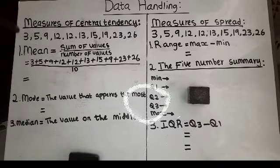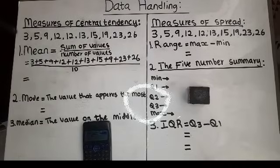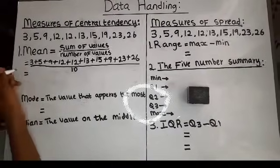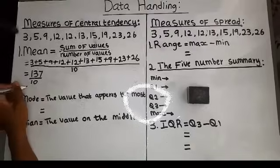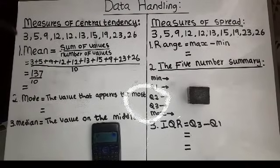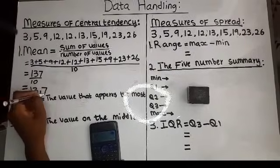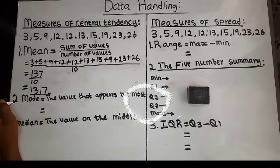We divide the sum by 10. That gives us 137 over 10. Pressing this on the calculator: 137 divided by 10 gives us 13.7. So 13.7 is our mean. This is how we calculate the mean.